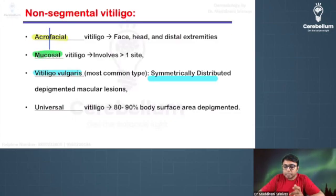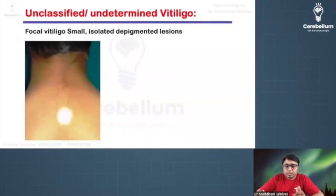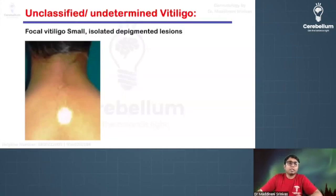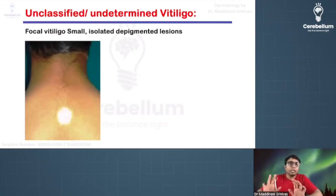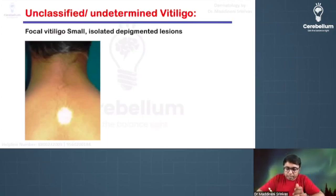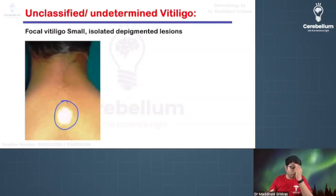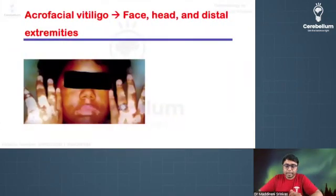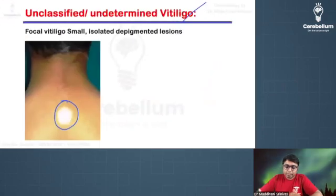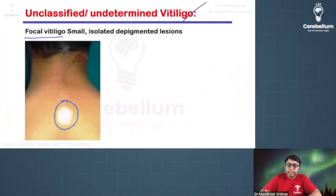The unclassified or undetermined variety of vitiligo presents with one or two lesions of hypo- or depigmented areas over the body. We can sometimes see this in normal individuals and need not worry. This unclassified variety is called focal vitiligo.